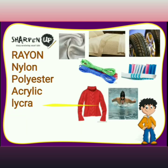Now let's see the types of synthetic fibers. First is rayon. It is a synthetic fiber that has a silk-like appearance. It was developed as an alternative to silk fiber, and thus it is also called artificial silk. Rayon is made from a naturally occurring polymer called cellulose, which is extracted from wood pulp.